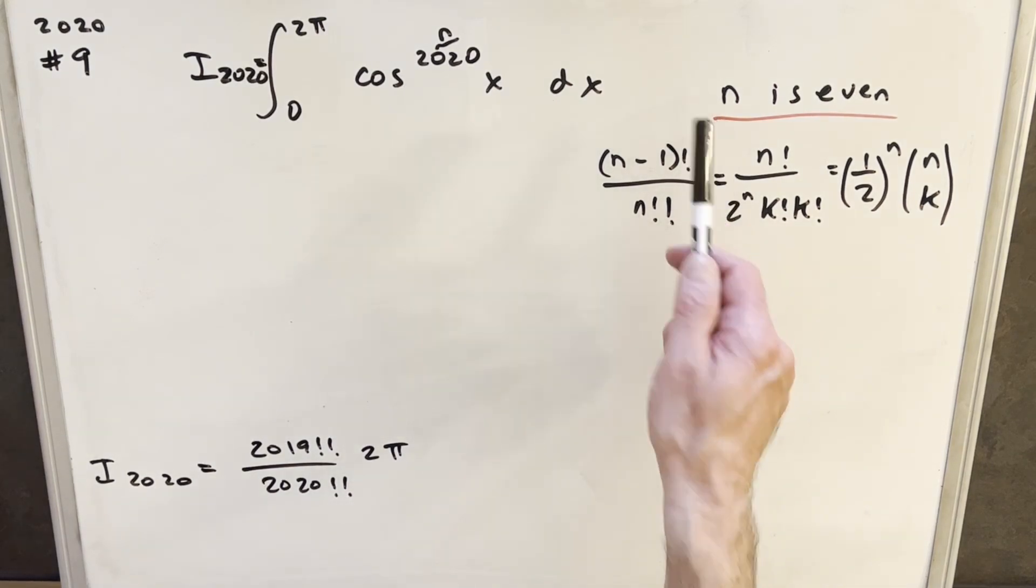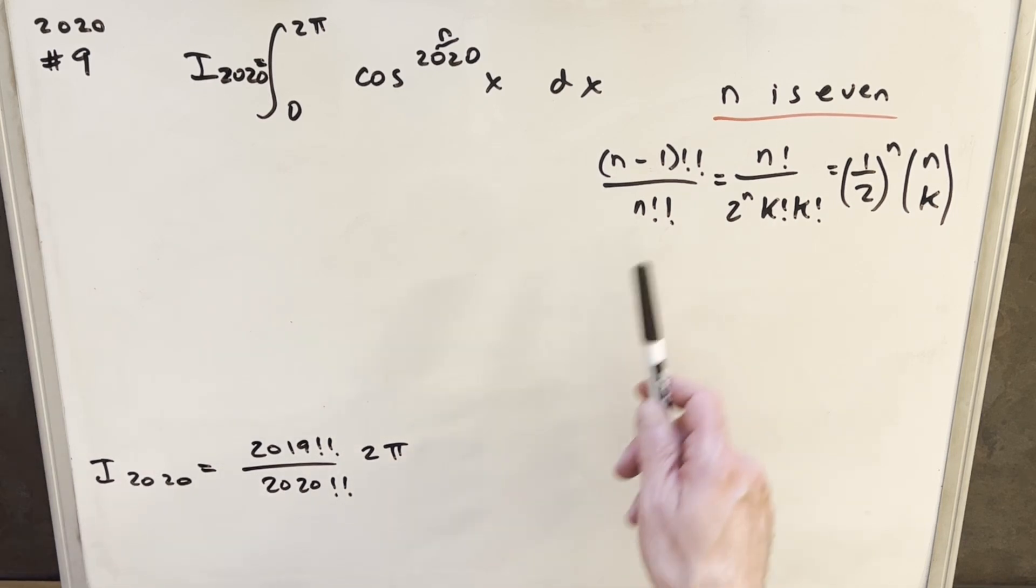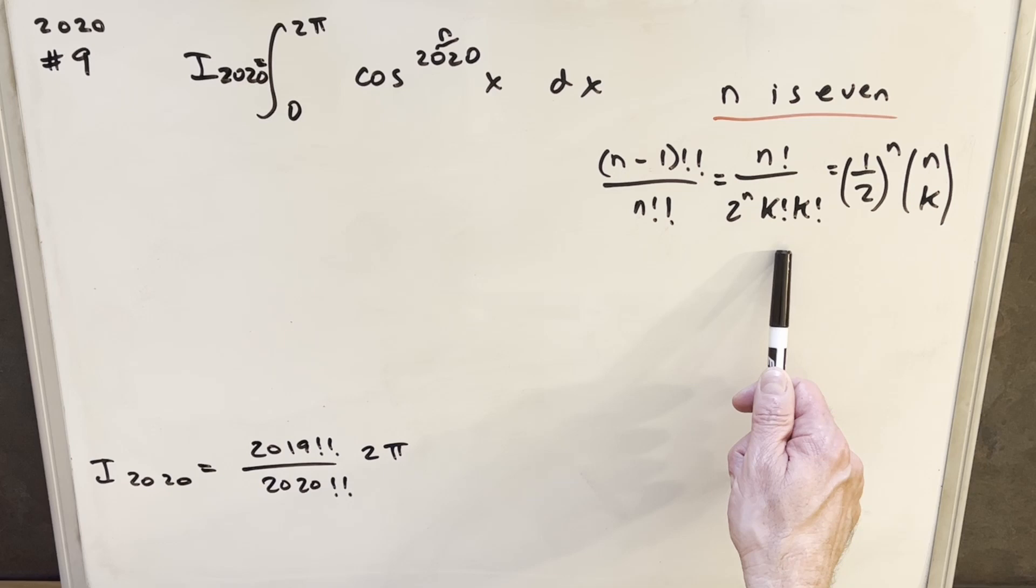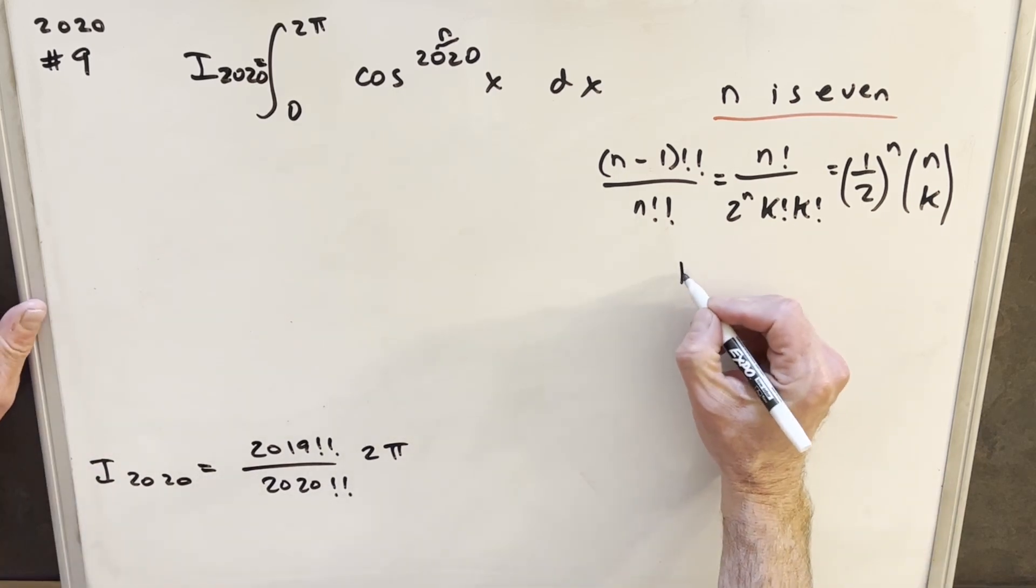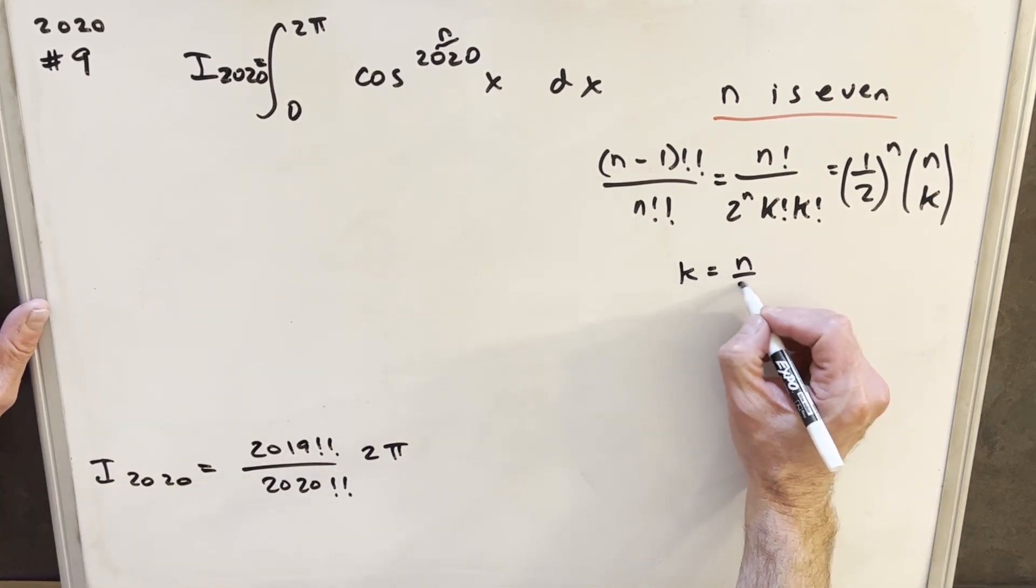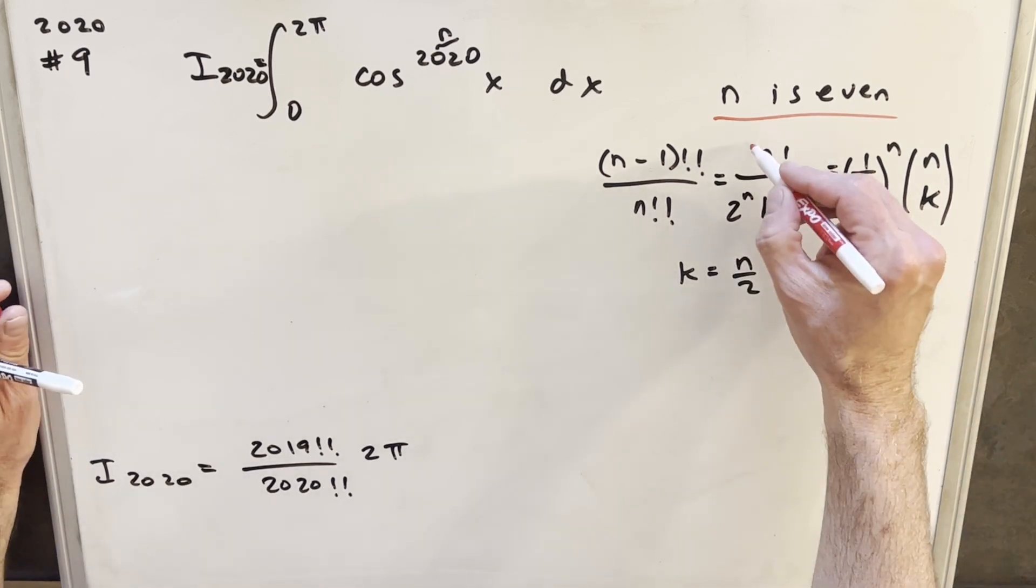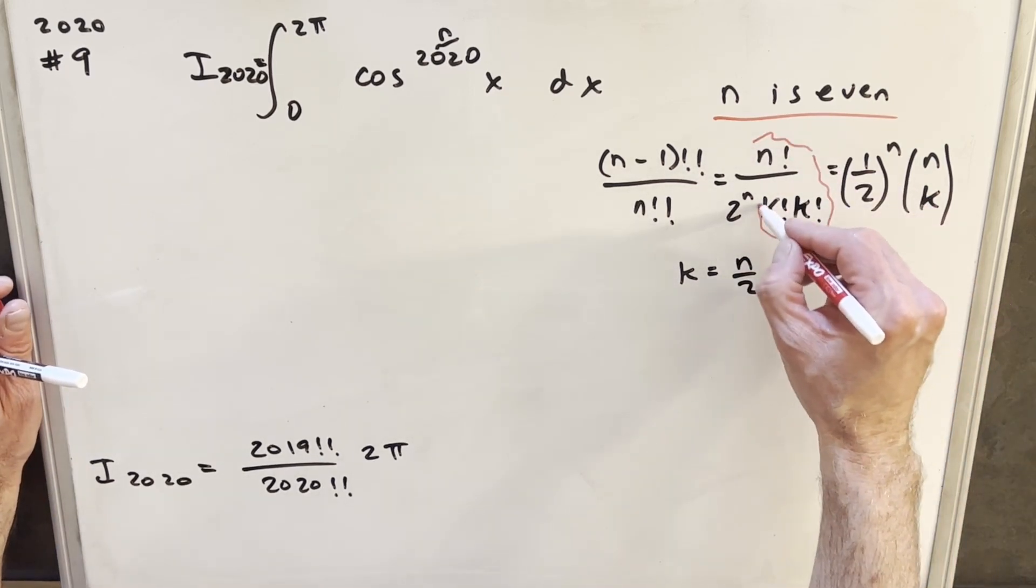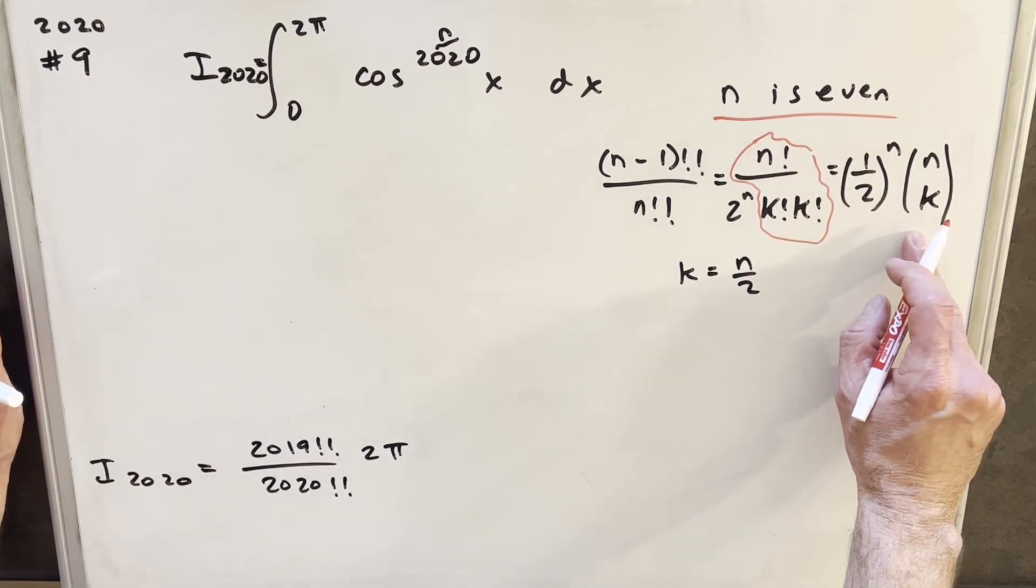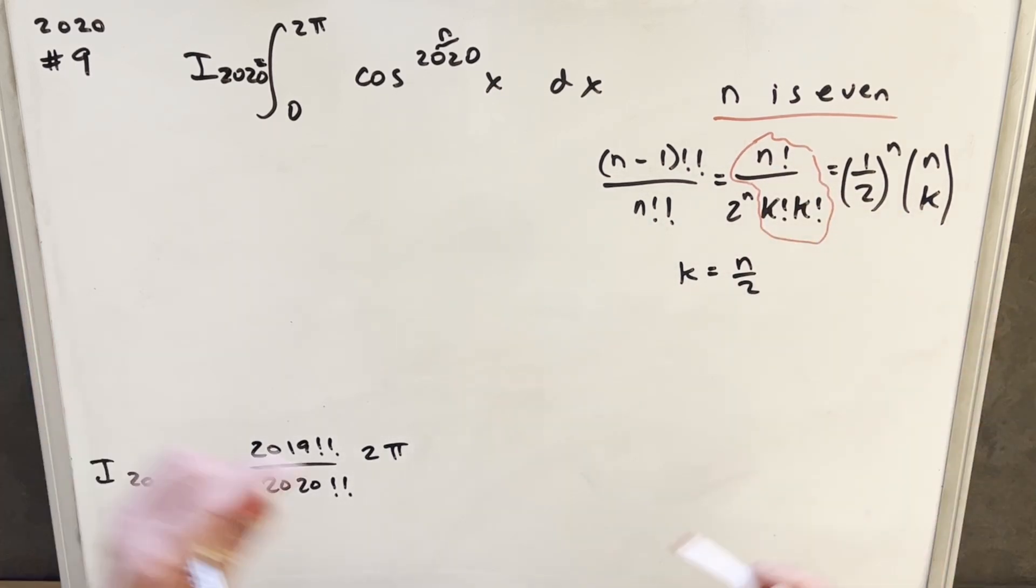What I want to do is we have this formula over here on the right for handling double factorial, and this only works when n is even. There's another similar formula when n is odd, but we've got this formula for the even case, which just puts it back into form of the factorial. Our k value is going to be, k value is going to be just n over 2 here, so we know what all these things are. You may notice that this right part right here is actually n choose k, so you can also write it this way in terms of n choose k.